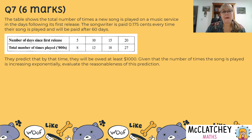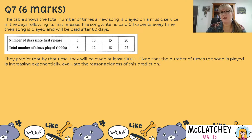They predict that by the time 60 days is reached they'll be owed at least a thousand dollars — that's greater than a thousand dollars. Given that the number of times the song is played is increasing exponentially, evaluate the reasonableness of this prediction.